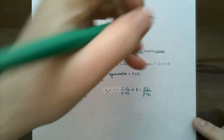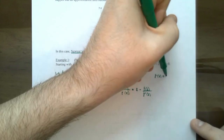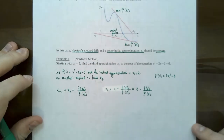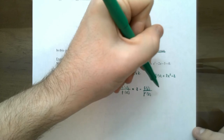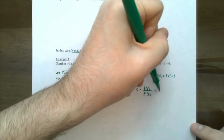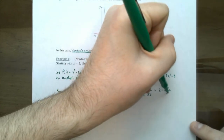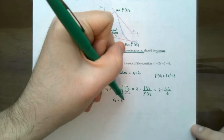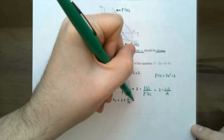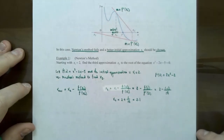We need to calculate the derivative. The derivative of f(x) is 3x² minus 2. If you substitute 2 into the original function, the y-value is negative 1. So we have 2 minus (negative 1) divided by the derivative evaluated at 2, which is 10. So x sub 2 equals 2 plus 1/10, or 2.1. That's the second approximation to the real zero.